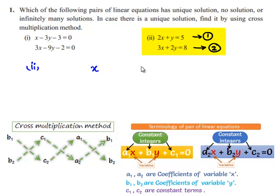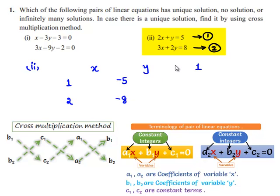First write x, y and 1. Here we have to write the coefficient of y, which is 1, and the coefficient of y here is 2. Now we write the constant terms, which are minus 5 and minus 8. Next, we write the coefficient of x, which is 2 and 3. Again, we write the coefficient of y, which is 1 and 2.